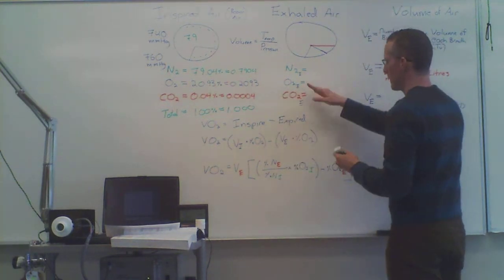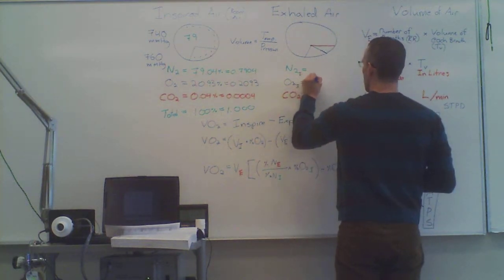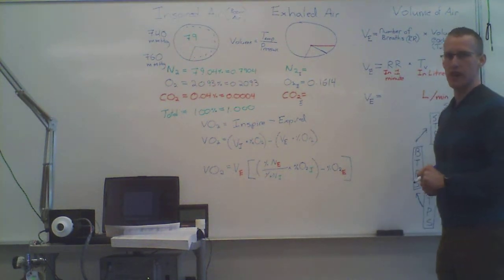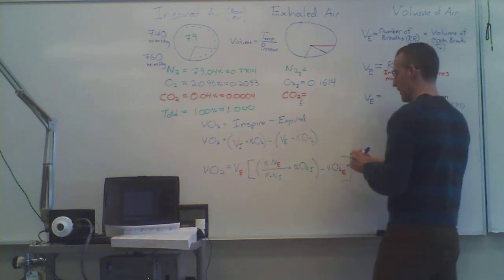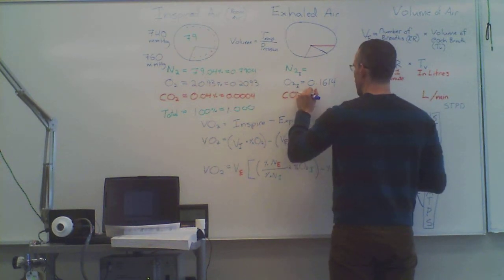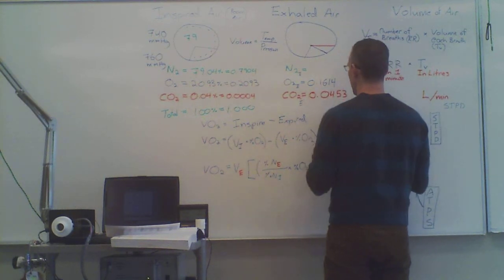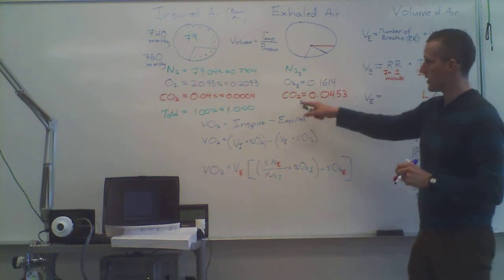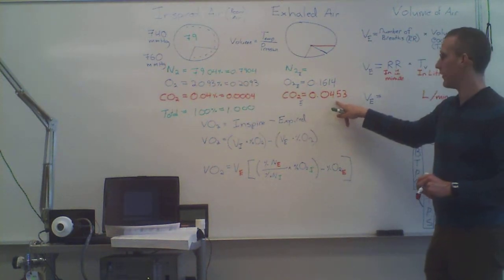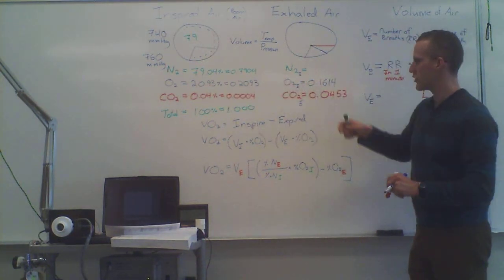Let's assume that the metabolic cart gives us this information. Oxygen expired equals 0.1614, which is 16.14%. But we must put it into a decimal form. Now it gives us CO2 expired. And let's assume that that is 0.0453. So 4%. We can see that's a huge increase from what we were breathing in. When we're breathing in, there's almost no CO2. By the time we're breathing out, it's 4%. And our oxygen has gone from 20% down to 16%, and that is the volume we're trying to measure.